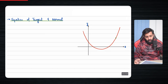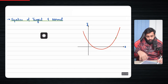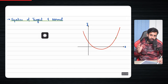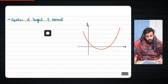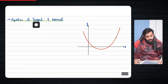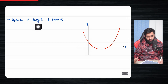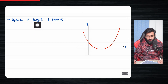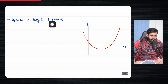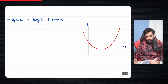First I'll give you a bit of an explanation, then I'll do an example, and then we'll do some more complex examples. But before we dive into how to find the equation, let's first understand what a tangent and normal really is.